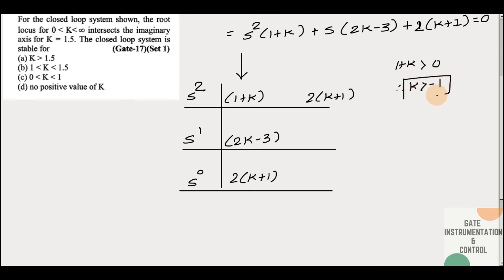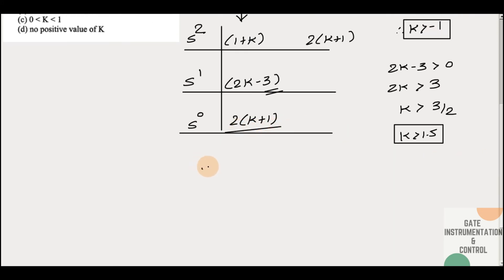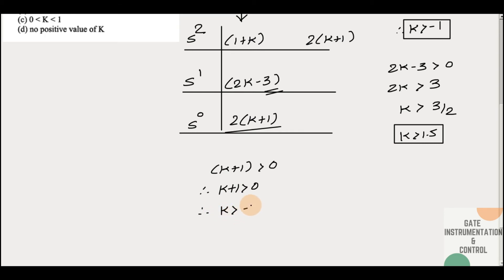Second condition: (2k - 3) > 0, therefore 2k > 3, so k > 1.5. I used greater than zero here because the given condition states k is between 0 and infinity. Third condition: 2(k + 1) > 0 — the 2 cancels to the denominator — so (k + 1) > 0, giving k > -1.